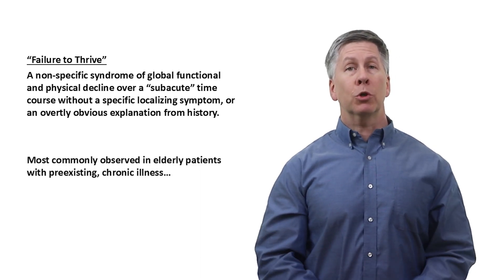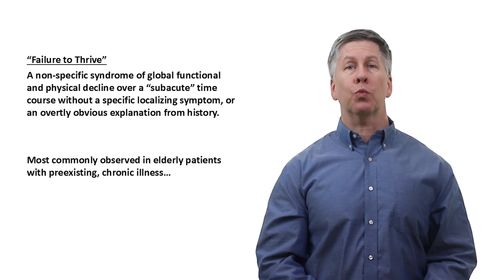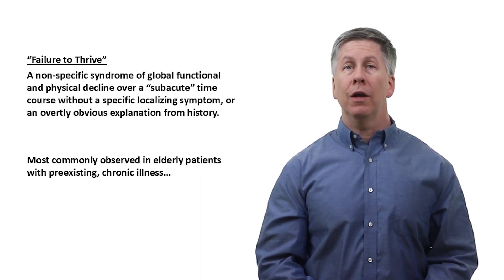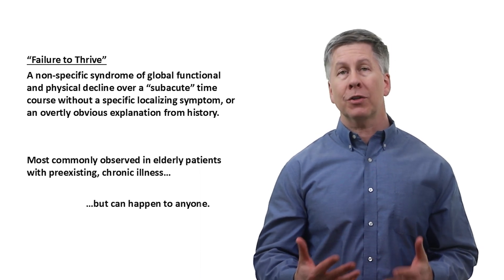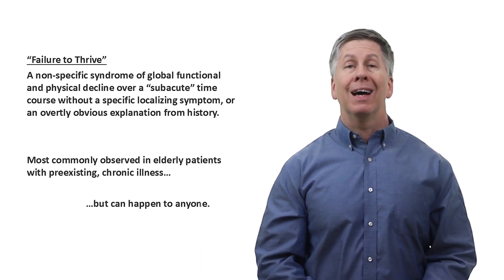The syndrome is most commonly observed in elderly patients with pre-existing chronic illness, but it can also happen to anyone irrespective of their baseline state of health. Not all failure to thrive looks the same. There are overlapping subtypes based on the predominant manifestation. These are not official categories, but in my experience — and this syndrome is very much within my usual scope of practice — the five primary manifestations are as follows.